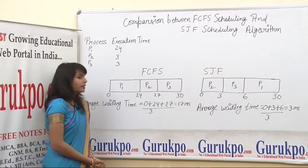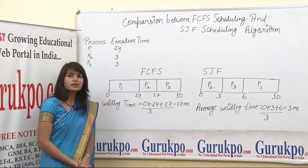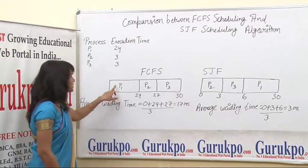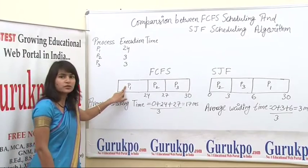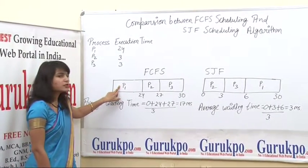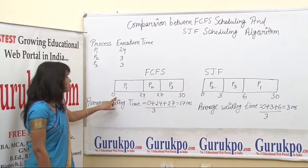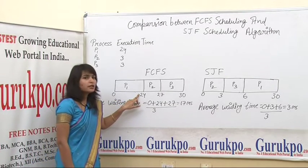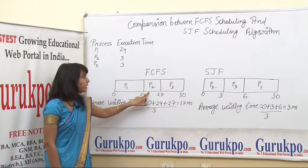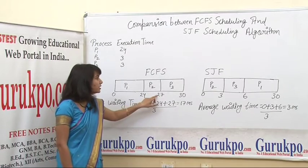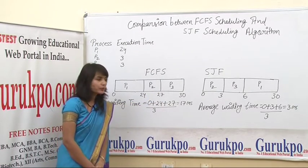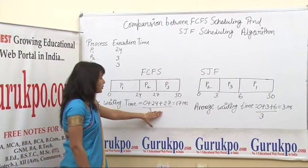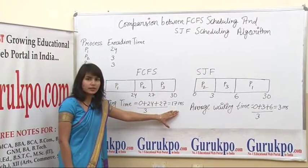When we apply the FCFS policy, which is implemented through a FIFO queue, P1 process requests the processor first and gets the CPU at time 0. After 24 milliseconds, P2 gets the CPU, and after that P3 gets the CPU. The average waiting time after calculation is 17 milliseconds.